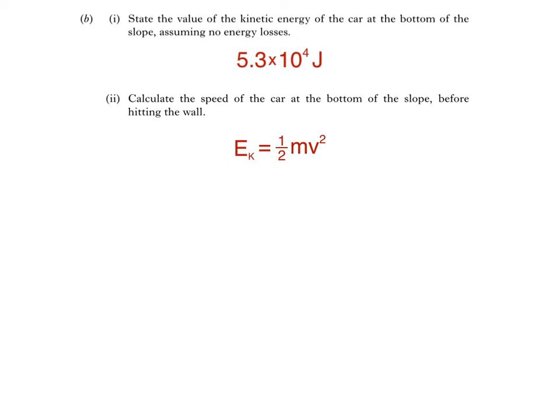That gives us 5.3 times 10 to the power of 4 is equal to 0.5 times 750 times v squared. Dividing both sides by 0.5 times 750 will make v squared the subject of the equation, like this, which works out to be 141.3.